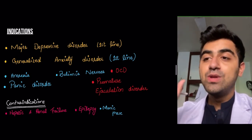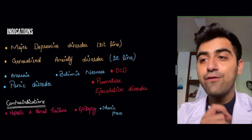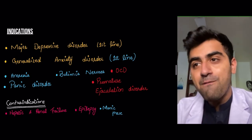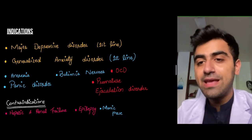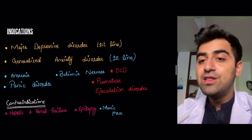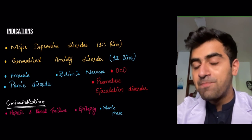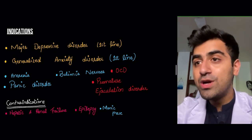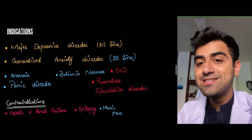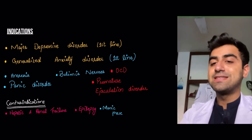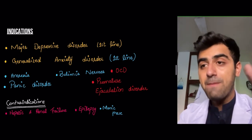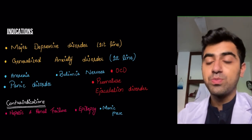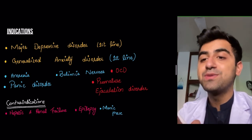We need to be careful not to prescribe SSRIs during the depressive episode of bipolar disorder. Take a careful history — if the patient has episodes of mania or impulsivity and you suspect bipolar disorder, go for a mood stabilizer instead of an SSRI, because SSRIs might precipitate a manic phase.